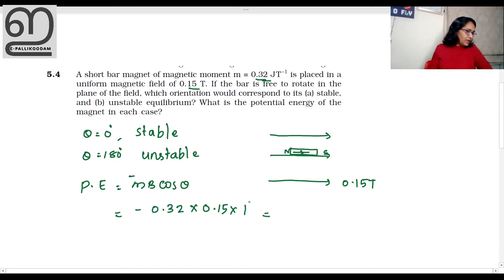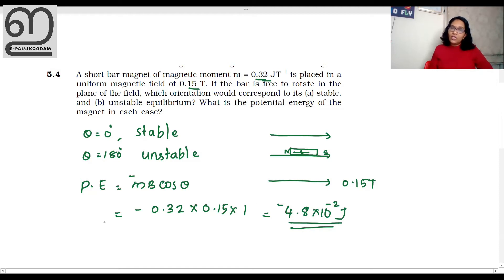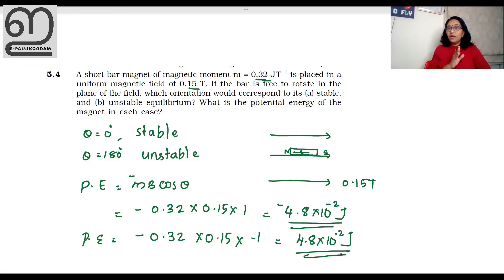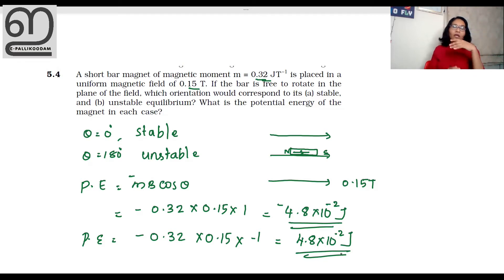We get 4.8 into 10 raised to minus 2 joule — this is the potential energy for the stable case. For the unstable case: minus 0.32 into 0.15 into cos 180, which gives minus 1, so the value is 4.8 into 10 raised to minus 2 joule. If the magnetic moment and external magnetic field are in the same alignment, the angle between them is 0 — that is stable. If they are anti-parallel, it is unstable.